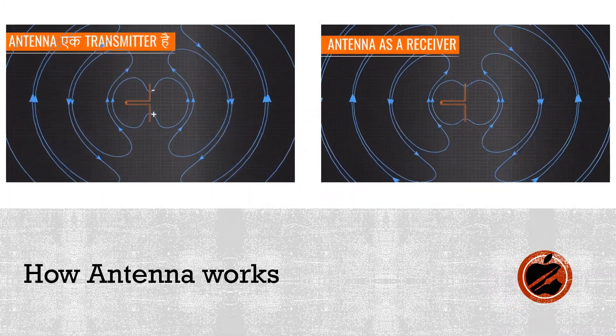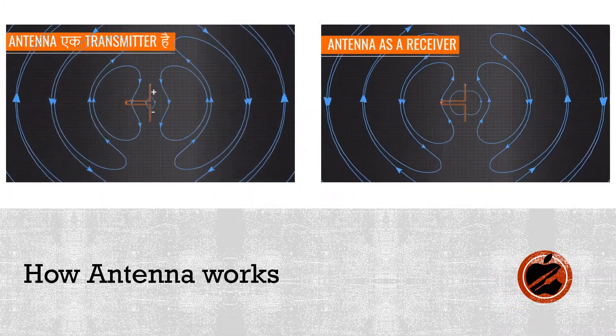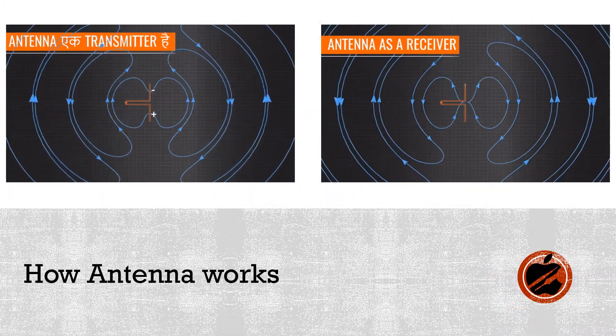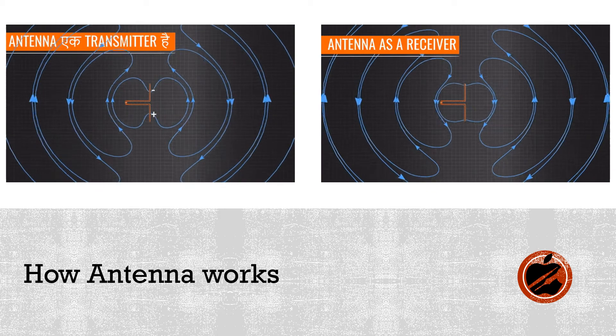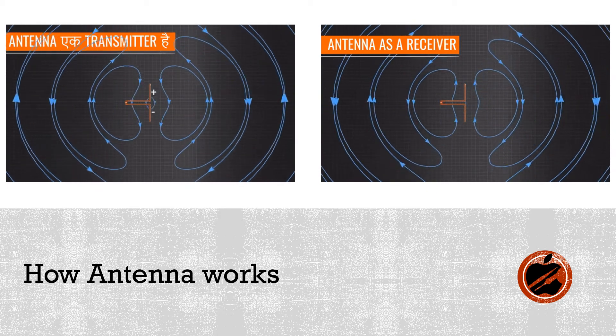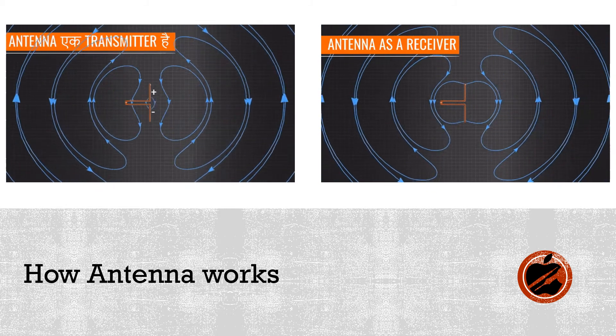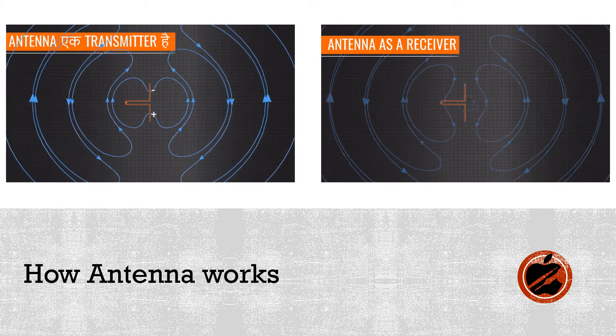In transmitter mode, a signal is applied to the metal strip, then positive and negative charges alternately travel, which generates radio waves in the air.